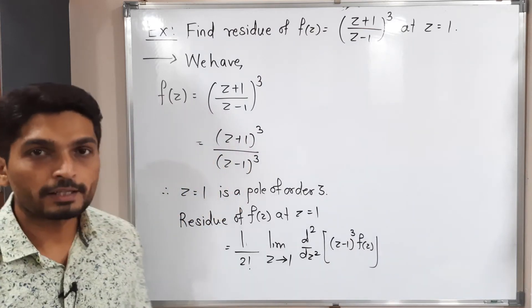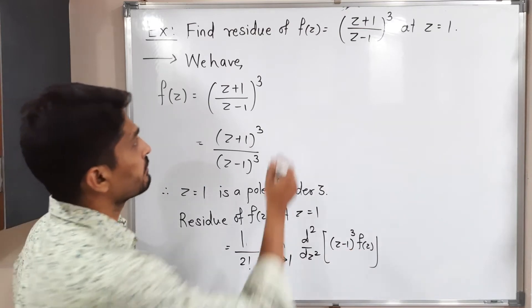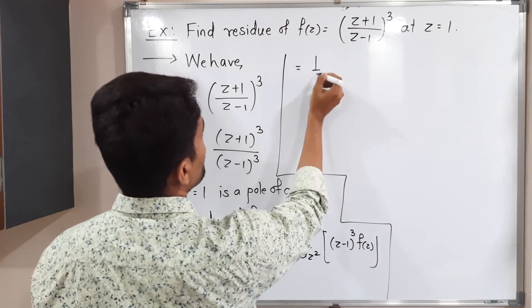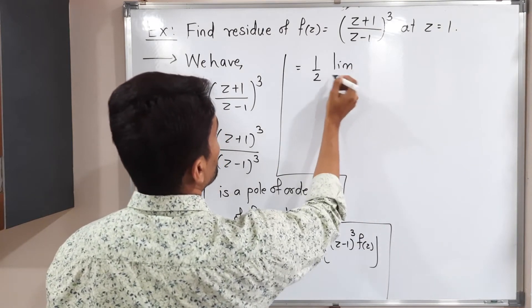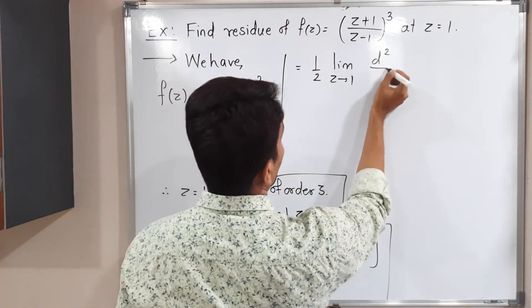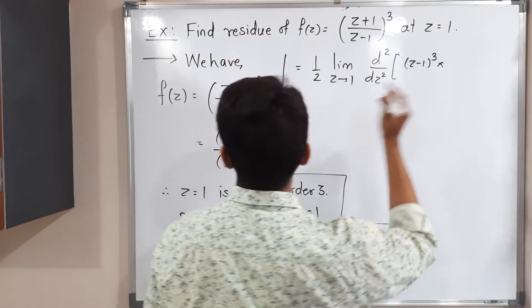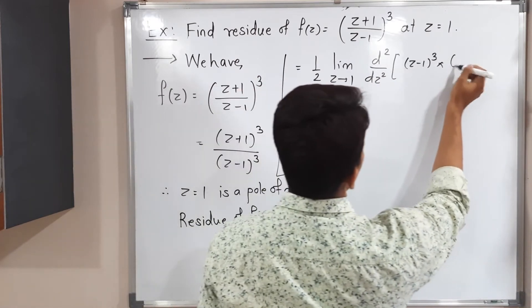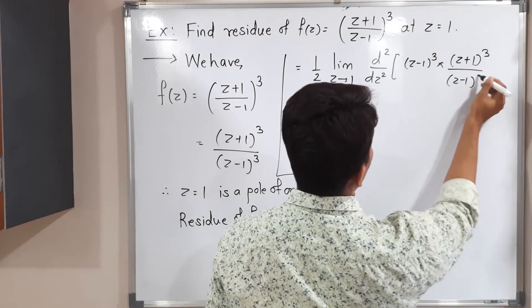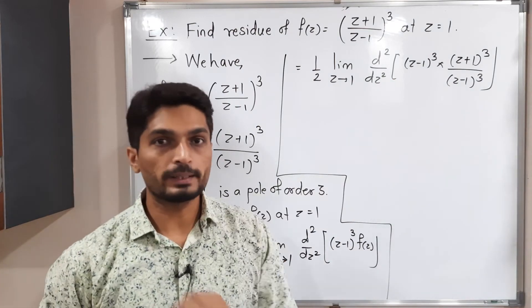After that z minus 1 cube f(z). So simply I use the formula. Let us put the value of f(z) and simplify further. So this is equal to 1 upon 2 factorial is 1 by 2. Limit z tends to 1. Second derivative of z minus 1 cube. What is my f(z)? This one.